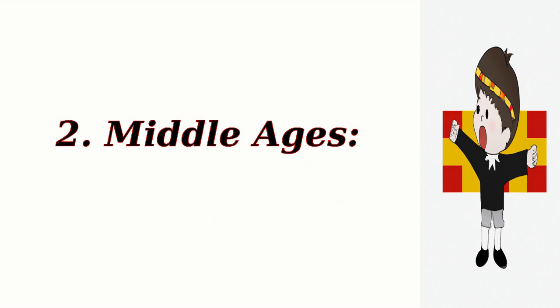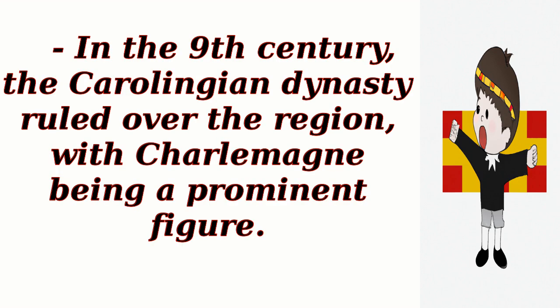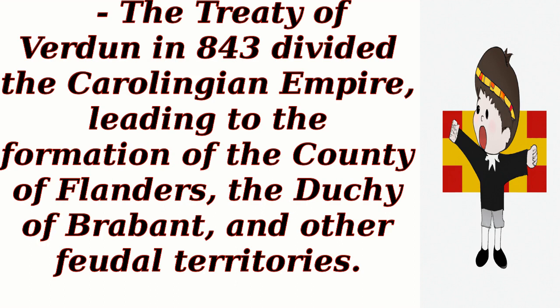Middle Ages. In the 9th century, the Carolingian dynasty ruled over the region, with Charlemagne being a prominent figure. The Treaty of Verdun in 843 divided the Carolingian Empire, leading to the formation of the County of Flanders, the Duchy of Brabant, and other feudal territories.